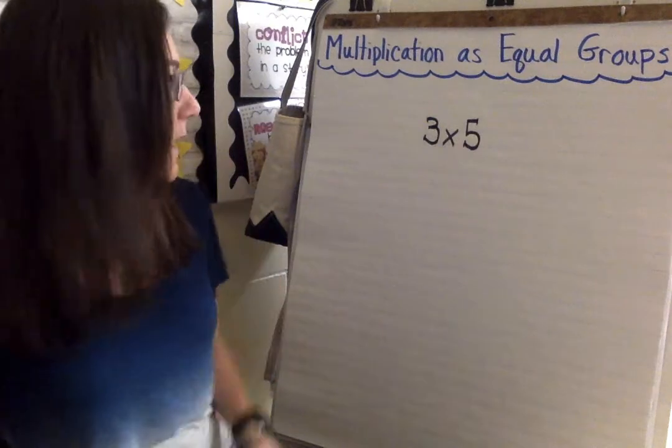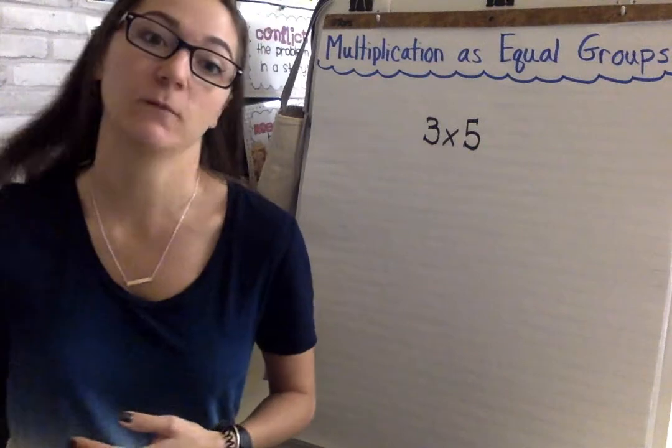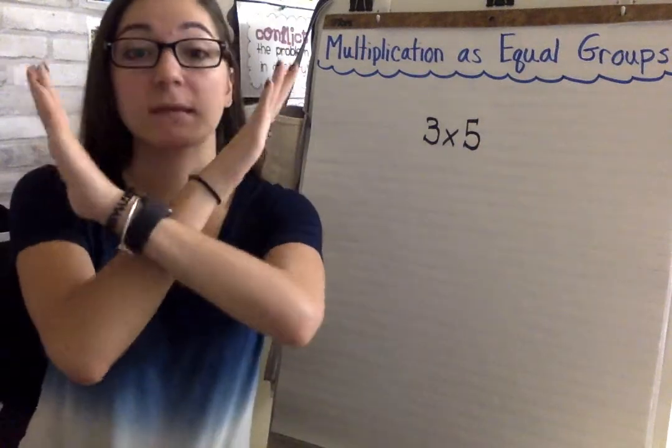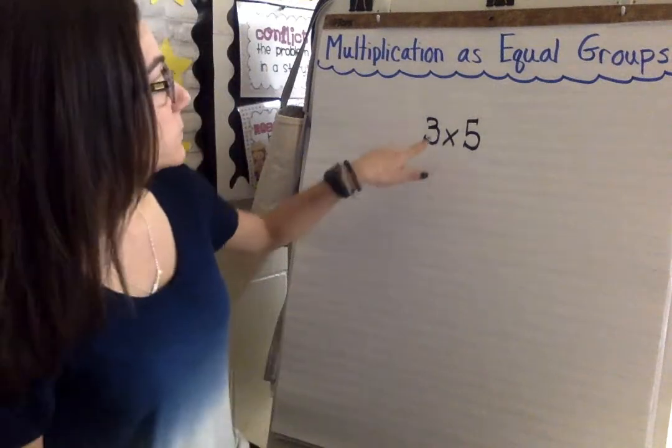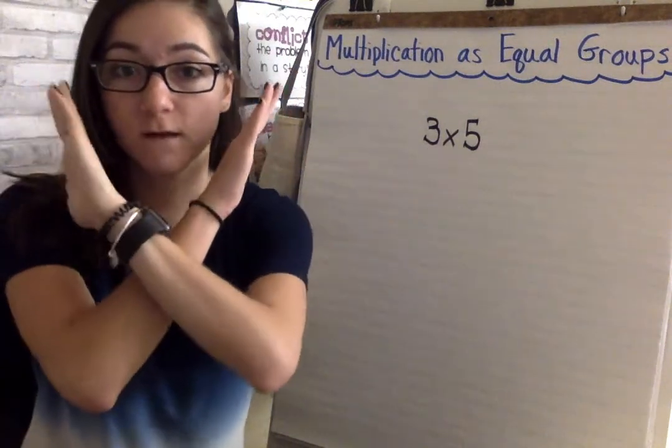Okay, when we think of multiplication we need to think about the multiplication sign and when we say the multiplication sign we can say equal groups and we can make this with our hands. So this would be three equal groups of five.